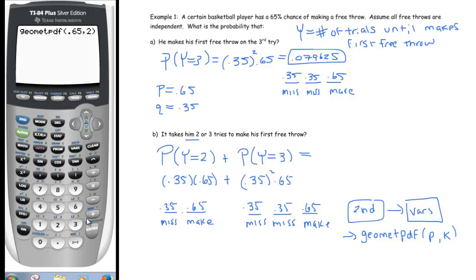What we would put into our calculator to compute these two probabilities quickly would be GeometPDF, and then the probability of our success is .65.